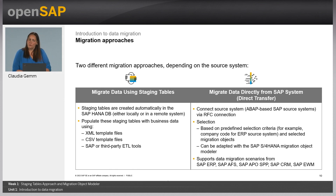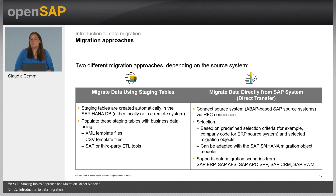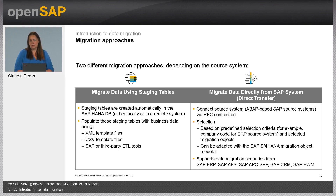In this first week, we focus on the approach to migrate data using staging tables — in short, just the staging table approach. But we have two different approaches available in our migration cockpit. Using staging tables means the user is responsible for the provisioning of the source data. The data will be stored in the so-called staging tables, which are created automatically in the SAP HANA DB depending on each single migration object used in a migration project. To get the data in, the staging tables will be populated by using XML or CSV template files or ETL tools. The staging tables approach can be used to migrate data from any legacy system.